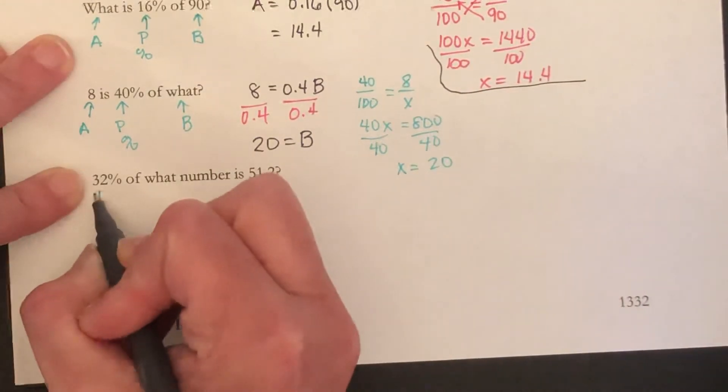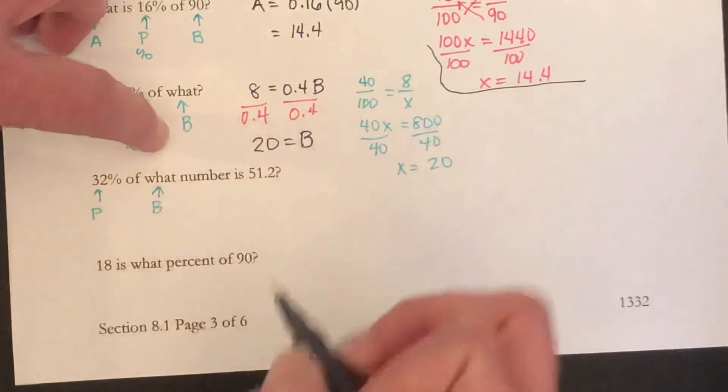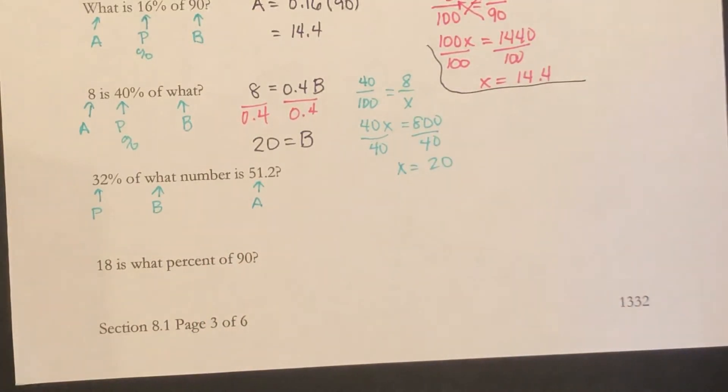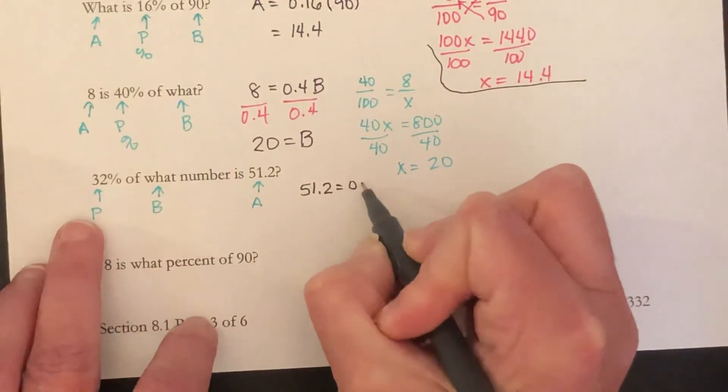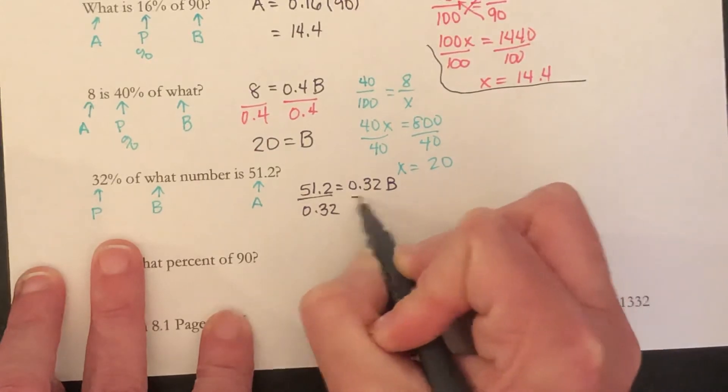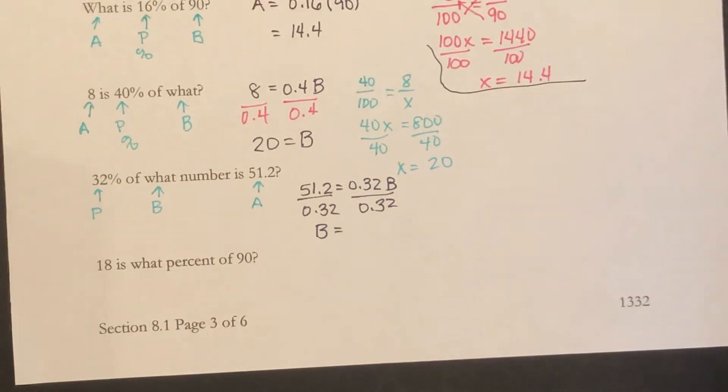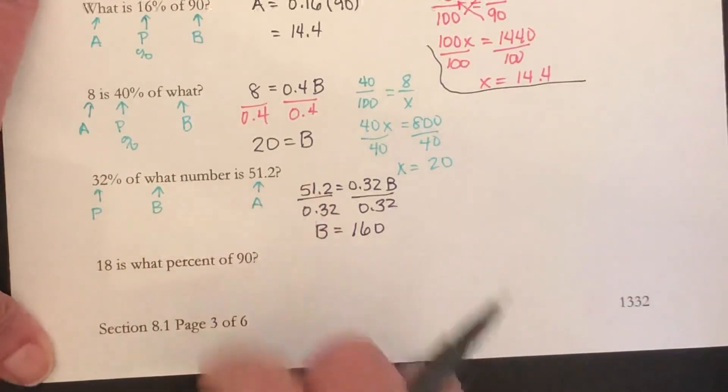32% percent, that's our P, of what, or our of is B, of what number is 51.2. So we have 51.2 is equal to 0.32 times B. Divide both sides by 0.32, and you will get B is equal to 160. So 32% of 160 is 51.2.